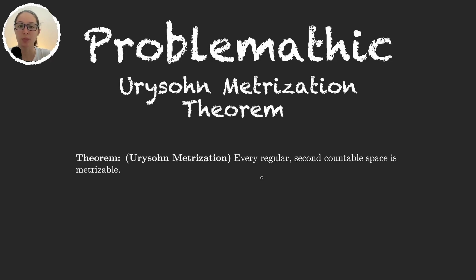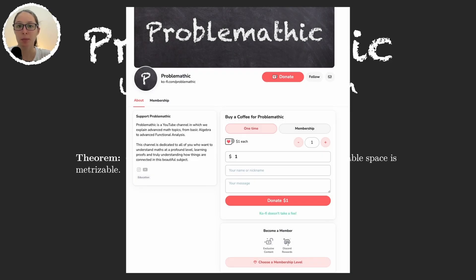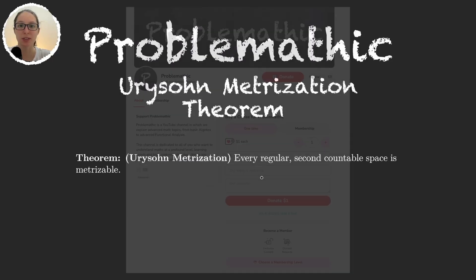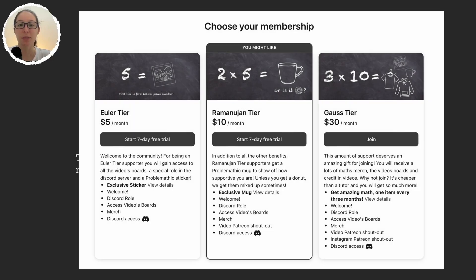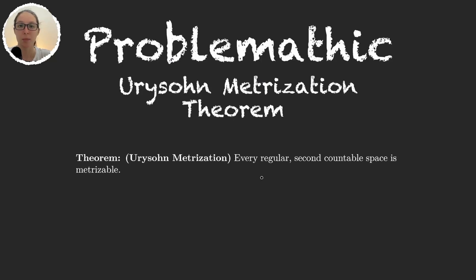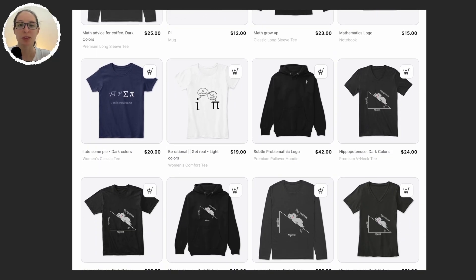Before we start, let me remind you that you can support the channel in many different ways. You can either donate or become a member on Ko-fi, where you get access to exclusive content. If you also want merchandise, you can become a member on Patreon to get stickers, mugs, hoodies, t-shirts and more. Or you can go directly to our store and buy items individually.